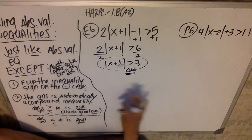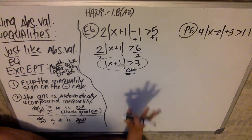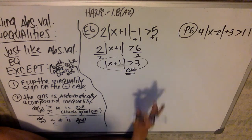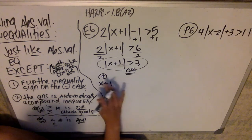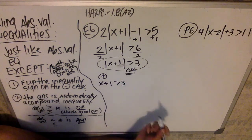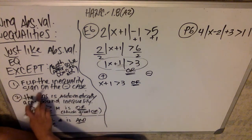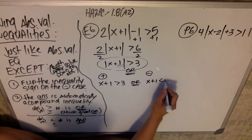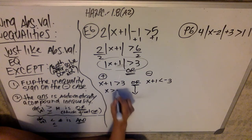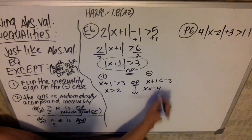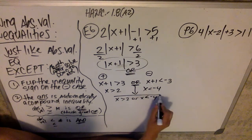My positive case is x plus one is greater than three. Or — because I already established it's a 'great-or' — my negative case is x plus one is less than negative three. I flip the direction of the inequality sign for the negative case. Subtracting one from both sides, I get x is greater than two, or x is less than negative four. So my answer is x is greater than two or x is less than negative four.